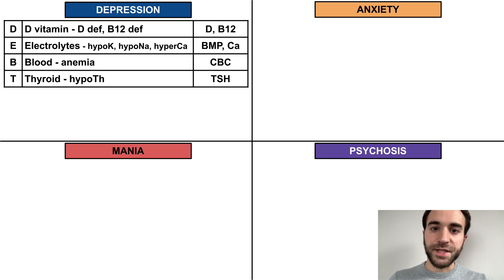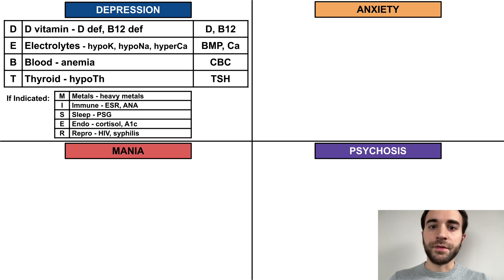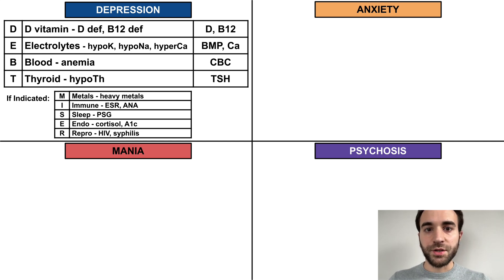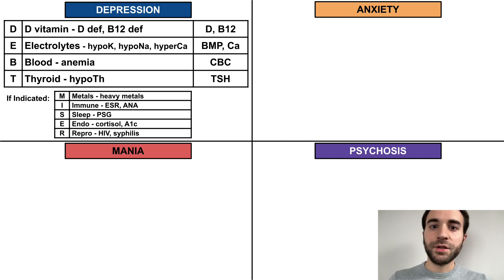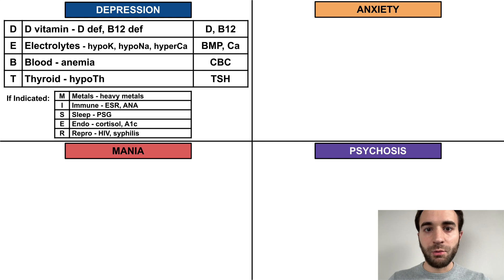Most patients with depressive symptoms should receive at least this basic screening, but there are some additional causes of depression that should be screened for if there is clinical suspicion. These can be remembered with the mnemonic MISER. Metals refers to heavy metals such as lead poisoning. Immune refers to autoimmune conditions such as lupus, screened for with an ESR and ANA. Sleep refers to sleep problems, specifically obstructive sleep apnea, screened for with a sleep study. Endocrine refers to hypercortisolemia and diabetes, screened for with cortisol level and hemoglobin A1c.